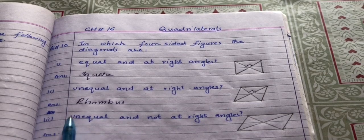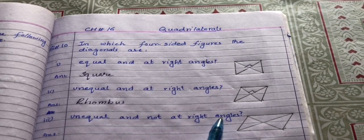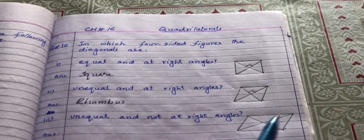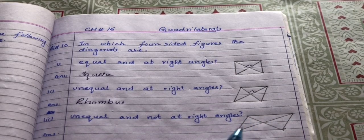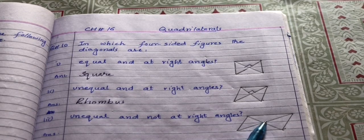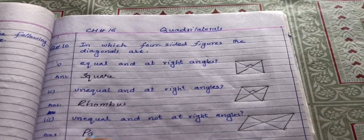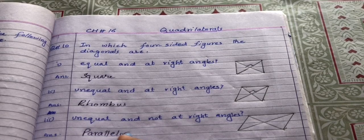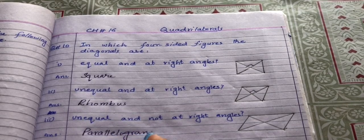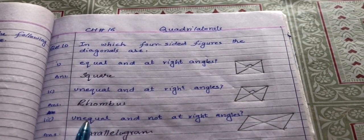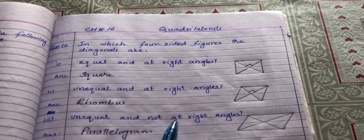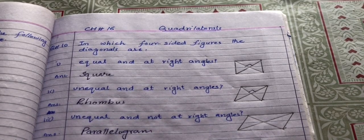The third case is: the diagonals are unequal and not at right angles. As we know, in a parallelogram the diagonals are not equal in length and they intersect each other not at 90 degrees or right angles. So in a parallelogram, the diagonals are unequal and not at right angles.